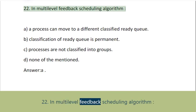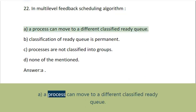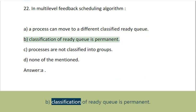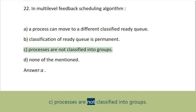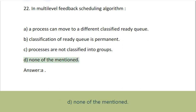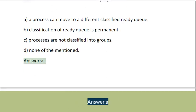Question 22: In multi-level feedback scheduling algorithm: A. A process can move to a different classified ready queue, B. Classification of ready queue is permanent, C. Processes are not classified into groups, D. None of the mentioned. Answer: A.